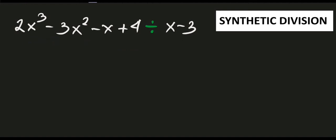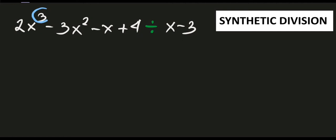What do we mean by standard form? The list of exponents is arranged in decreasing order — the highest exponent serves as the head and the constant serves as the tail of the polynomial. For our problem, the exponents are 3, 2, 1, and the constant, so it is already expressed in standard form.